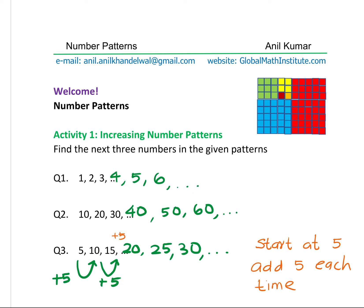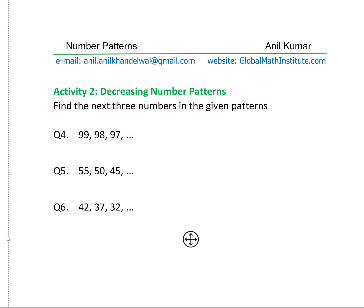Now let's move on and take some more examples. In Activity 2 we are calling it Decreasing Number Patterns. So this time the numbers will be decreasing. That means we need to subtract. So decreasing means take away so that you get a smaller number. These are the two operations that will be performed on the numbers.